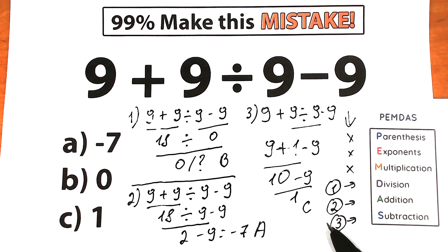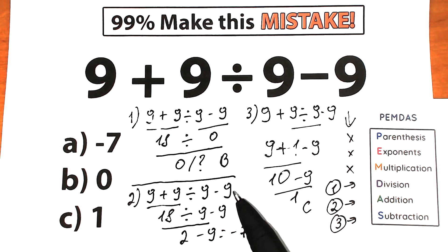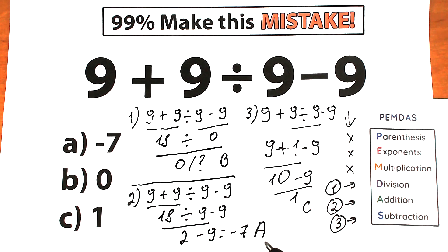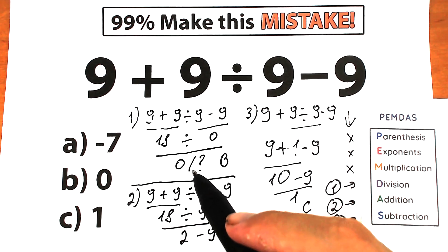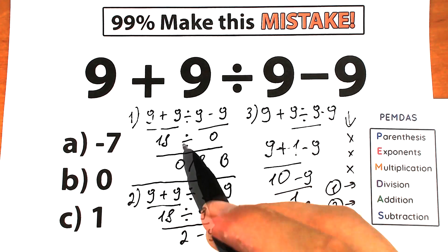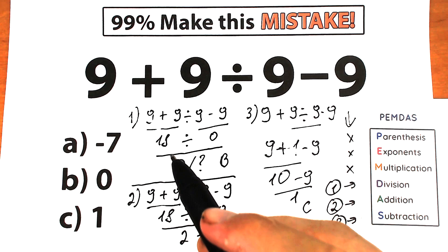So guys, what is the correct answer now? Option B, option A, or option C? A lot of students argue with each other about this all the time. In this first interpretation we solved our challenges absolutely randomly — we just jumped from left to right, which is absolutely wrong and incorrect.